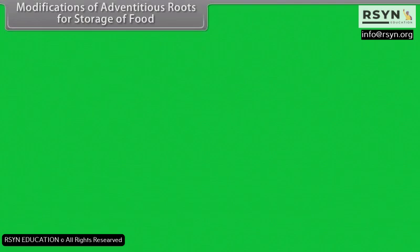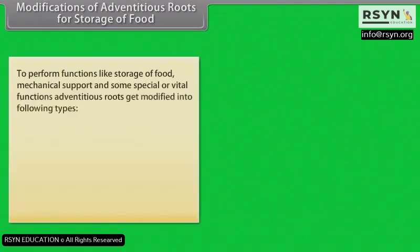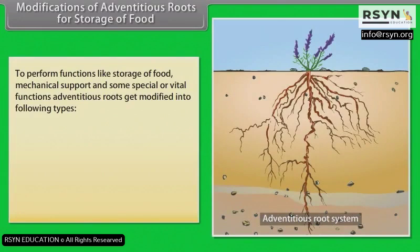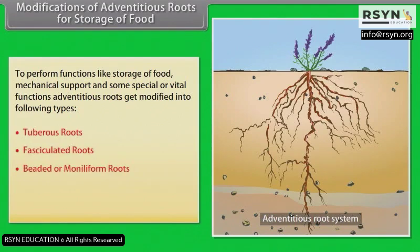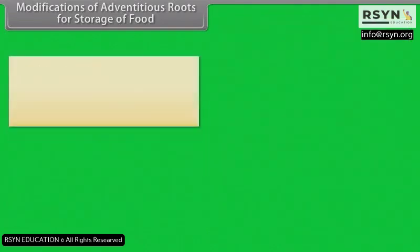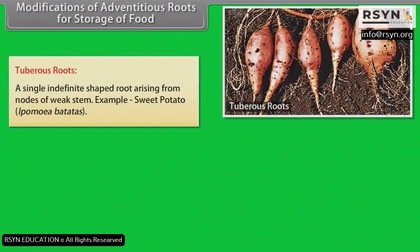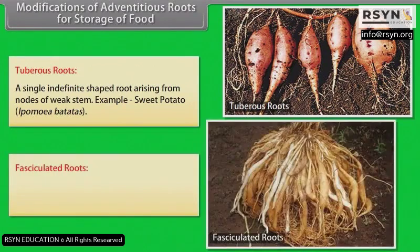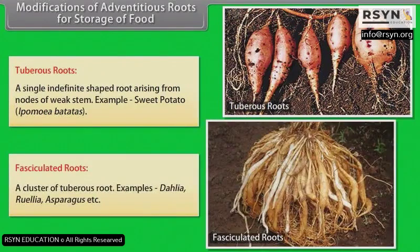Modifications of adventitious roots for storage of food: To perform functions like storage of food, mechanical support, and some special or vital functions, adventitious roots get modified into the following types: tuberous roots, fasciculated roots, beaded or moniliform roots, nodulated roots, and annulated roots. Tuberous roots: A single indefinitely shaped root arising from nodes of a weak stem. Example: sweet potato. Fasciculated roots: A cluster of tuberous roots. Examples: dahlia, Ruellia, asparagus, etc.